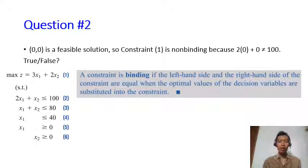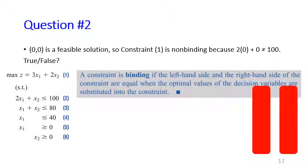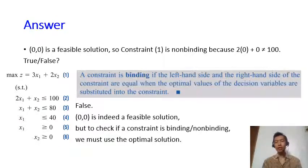Second question. Point (0,0) is a feasible solution for the Giapetta problem. So constraint 1 is actually non-binding because 2 times 0 plus 0 does not equal to 100. Is it true or false? The answer to this question is false. (0,0) is indeed a feasible solution. However, remember that when you want to check if a constraint is binding or non-binding, you must use the optimal solution. So you cannot just plug in any feasible point and say the left-hand side and right-hand side equal or not. You must use the optimal solution to do that.